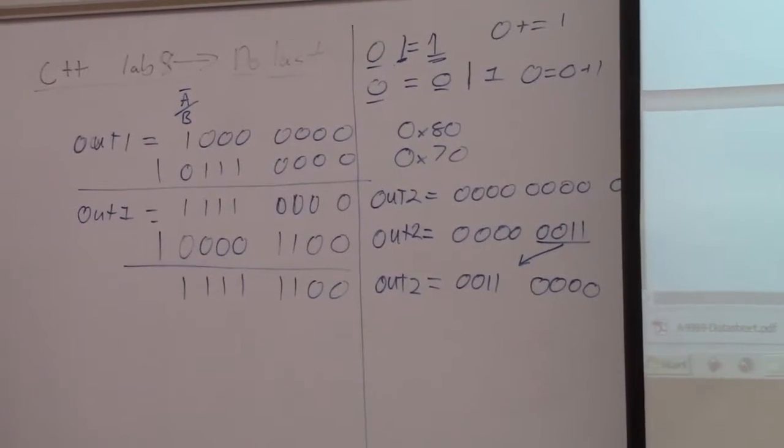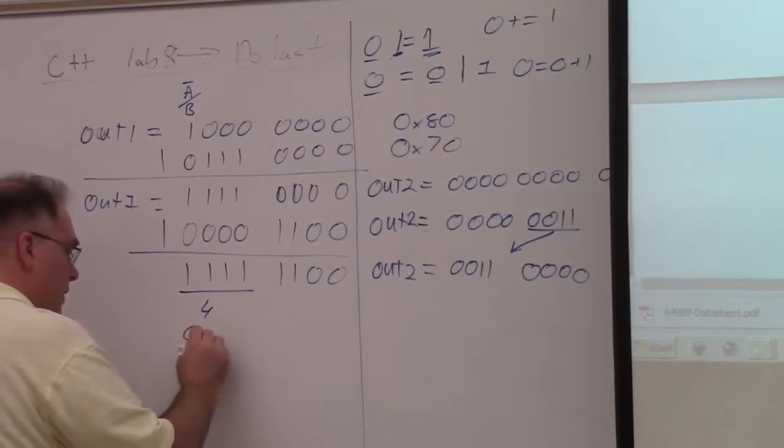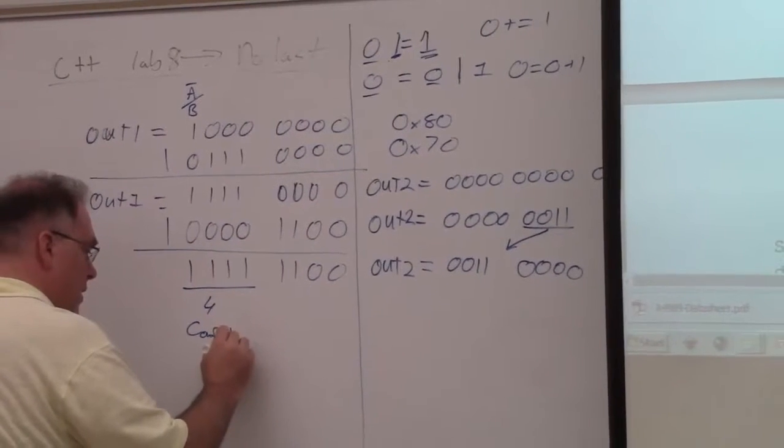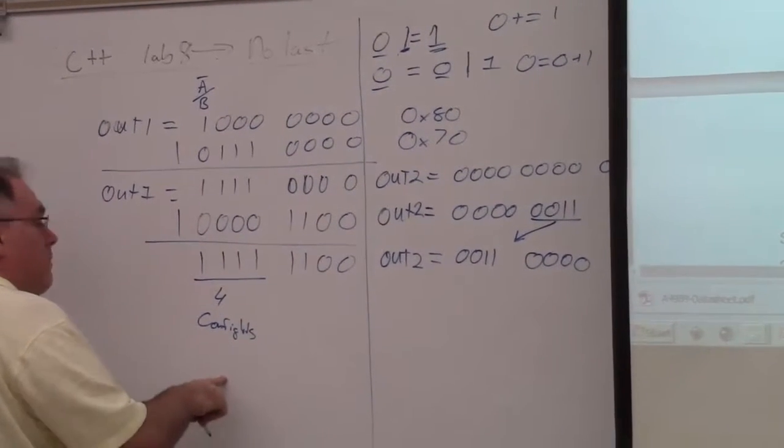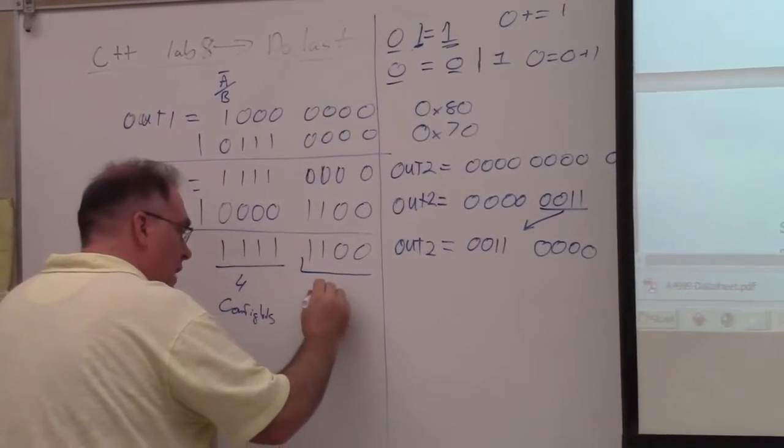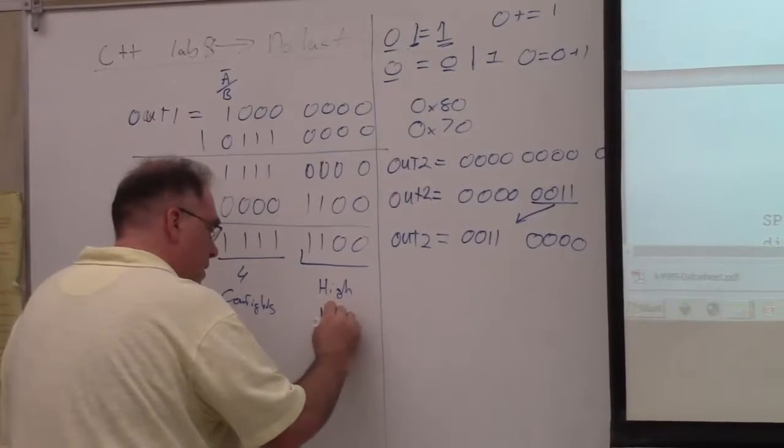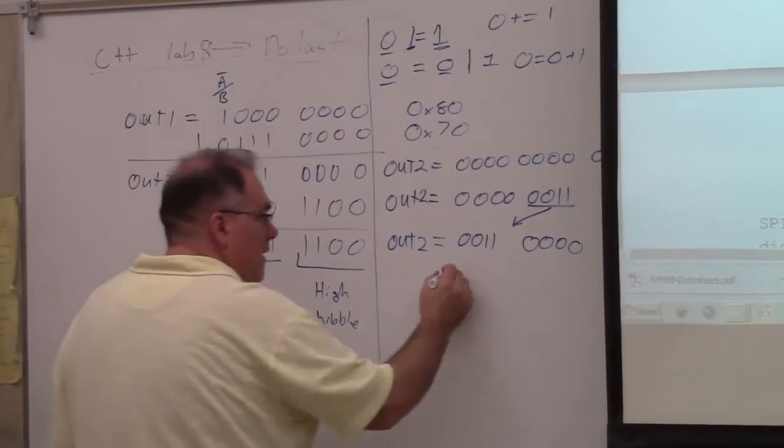So what you end up with is, these are the four config bits for the DAC. These are the, this is the high nibble. This is the low nibble.